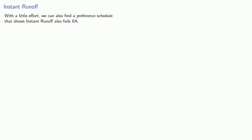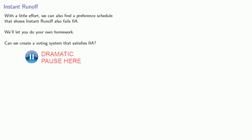And with a little effort, we can also find a preference schedule that shows instant runoff also fails independence of irrelevant alternatives. We'll let you do your own homework and come up with an example. So the question is, can we create a voting system that satisfies independence of irrelevant alternatives? And the answer is... Yes.